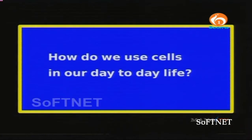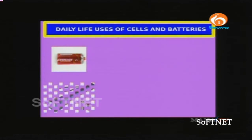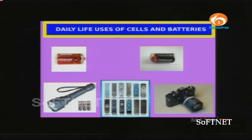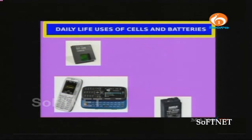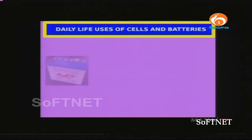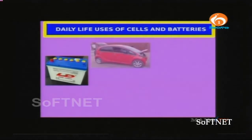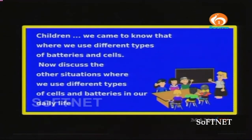How do we use cells in our day-to-day life? Cells are used in watches and computers. 1.5 volt batteries are used in teaser lights, remote controls, and cameras. Lithium-ion batteries are used in cellular phones. 6 volt and 12 volt batteries are used in motorbikes, cars, tractors, and all vehicles. We have come to know where we use different types of batteries and cells. Now discuss other situations where we use different types of cells and batteries in our daily life.